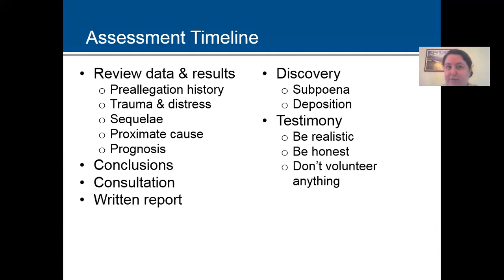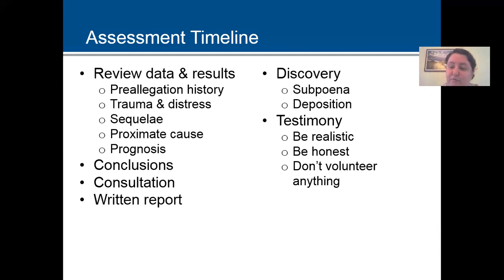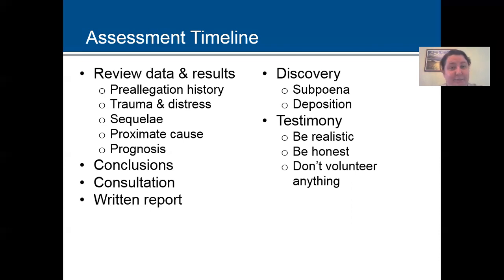Talk about the sequelae: substantial impairments in functioning that the plaintiff suffered, and ways in which the plaintiff has been resilient. Then address proximate cause — impairments that would not have occurred but for the alleged events, and impairments that might have occurred otherwise. Talk about prognosis as well: the degree of future impairments, partial or complete, temporary or permanent, and interventions or accommodations this person will need.